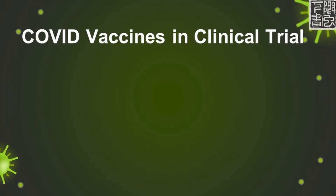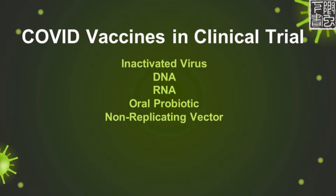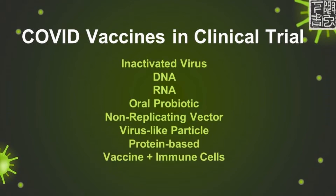There are many different types of vaccines in clinical trial for COVID: inactivated virus, DNA vaccine, RNA vaccine, oral probiotic, non-replicating viral carriers or vectors, virus-like particles, protein-based vaccines, loading the vaccine onto immune cells first, or repurposing other vaccines.